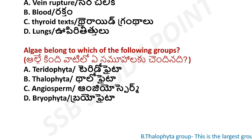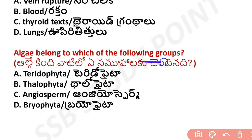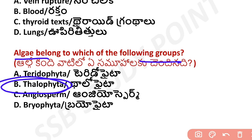Next question: algae belongs to which of the following groups? Algae are plants. The answer is the Thallophyta group. Thallophyta is the largest group among plants.